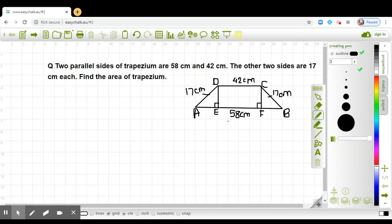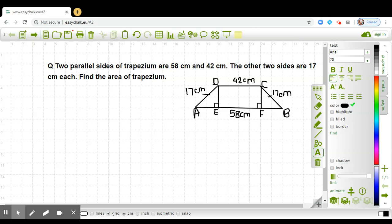Can you tell me what will be the length of EF? Yes, EF will be equal to CD because DEFC is a parallelogram. So I am writing here EF will be equal to CD, and it will be equal to 42 centimeters.